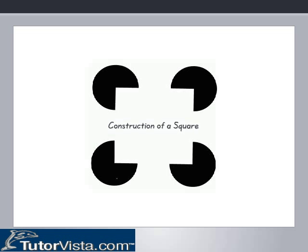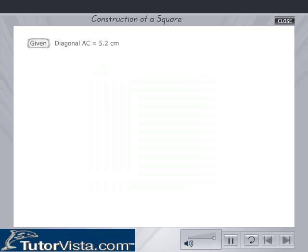Construction of a Square. To construct a square, given diagonal AC is equal to 5.2 cm. Note: in a square, the diagonals are equal.